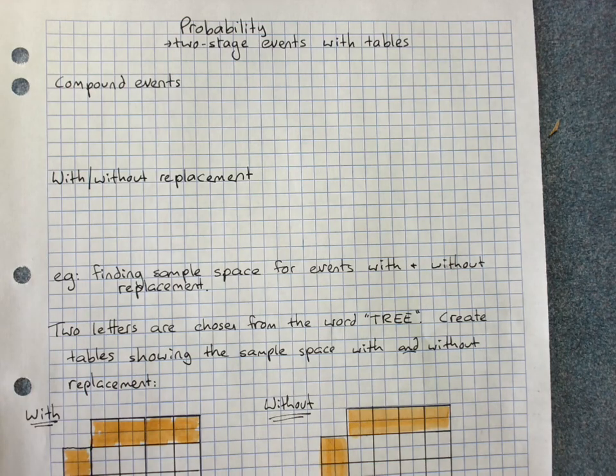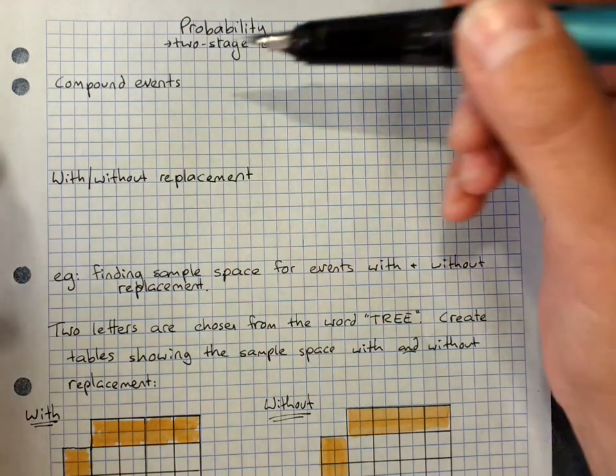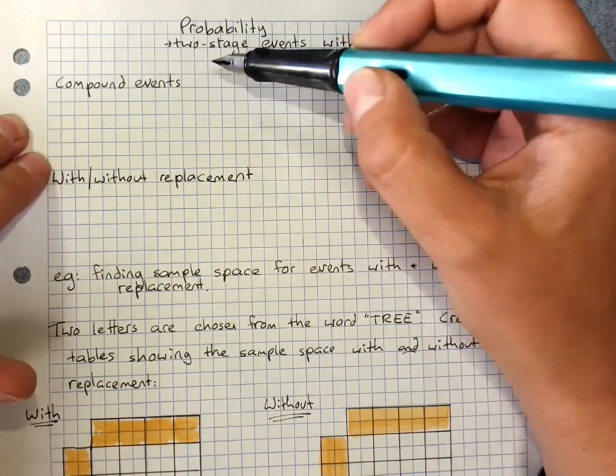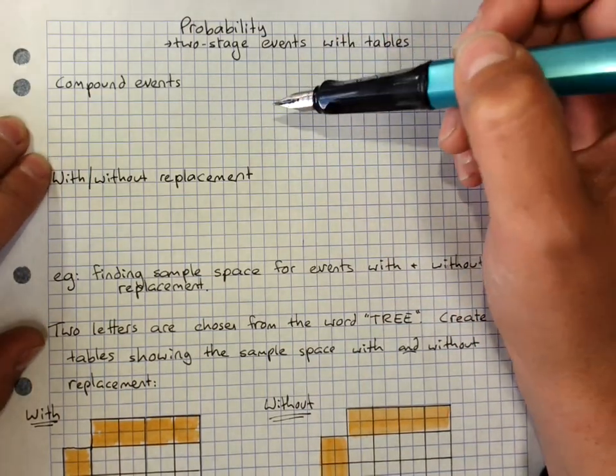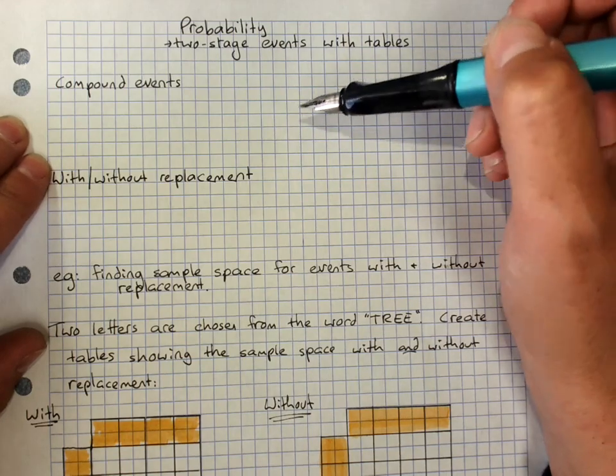An experiment can consist of a compound event, where you do two separate things, like tossing two dice, or selecting two people from a group, or flipping a coin twice.